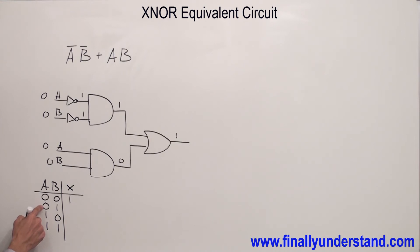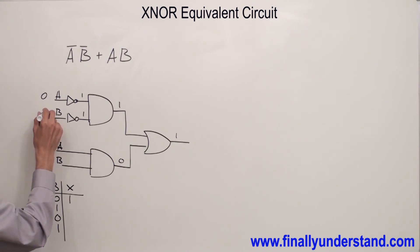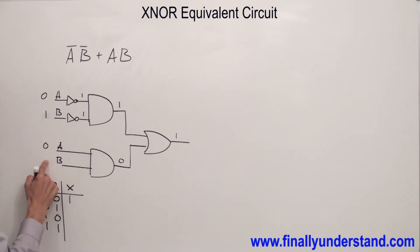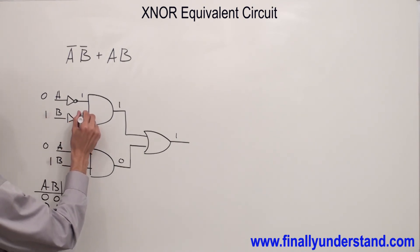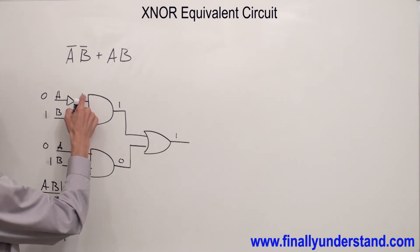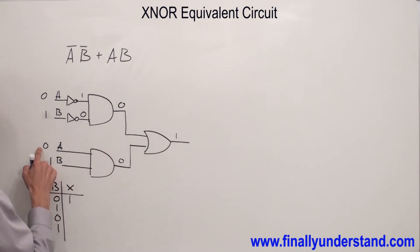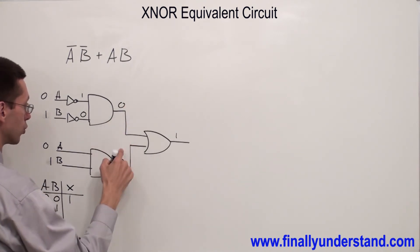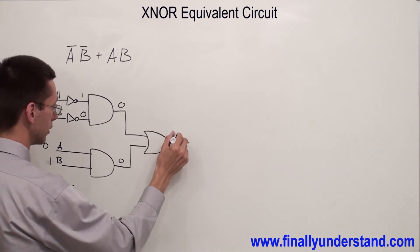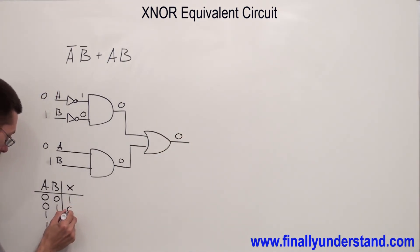That's why I write 1 over here. Next, A is going to remain 0, and B has to be changed to 1. This 1 is going to be inverted to 0. 1 AND 0 gives me 0. 0 AND 1 gives me 0. 0 OR 0 gives me 0. That's why I write 0 over here.